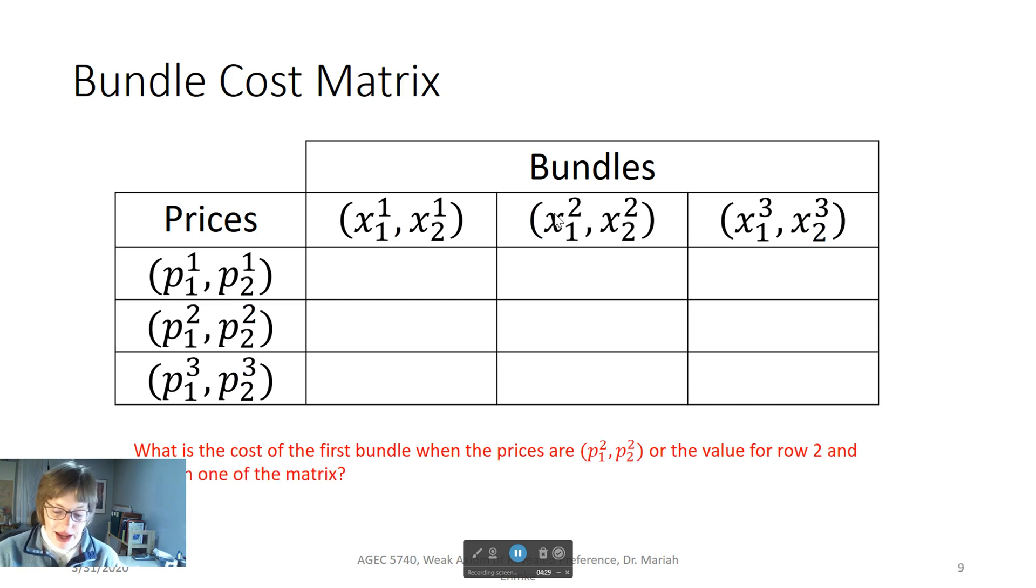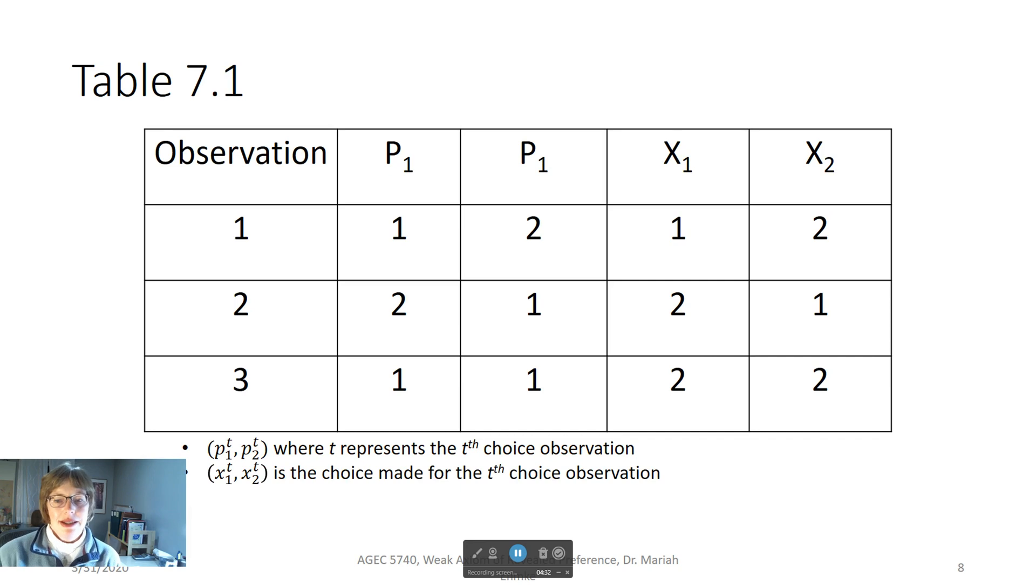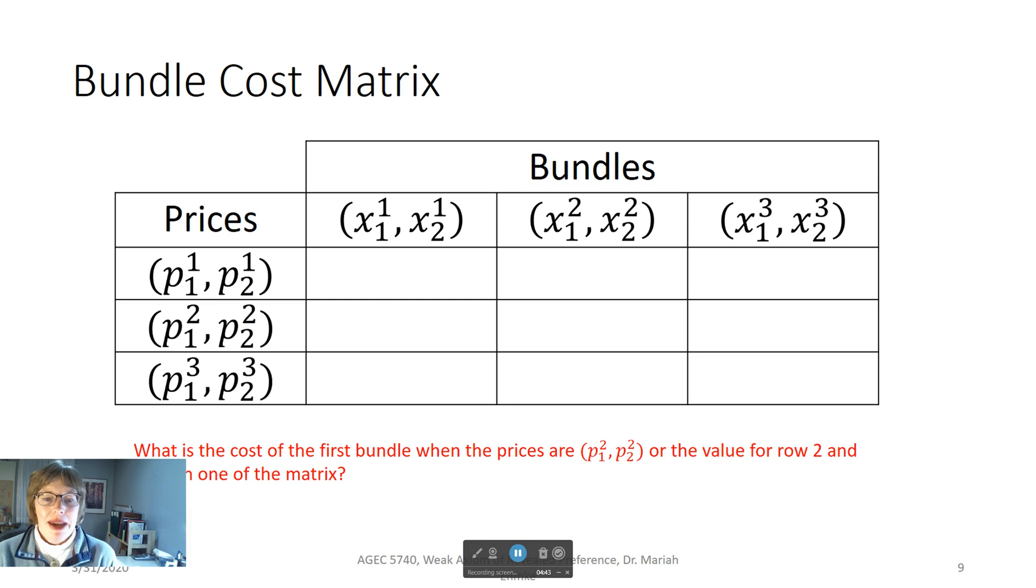Now, try to think about, given these prices and the choice information above, what would be the consumer's expenditure in each one of these observations? I give you this blank matrix to try to start thinking about it and filling it in. You might first think about the diagonal elements right here: the first column in the first row, the second column second row, and third column third row. What would be the expenditure in these cases?